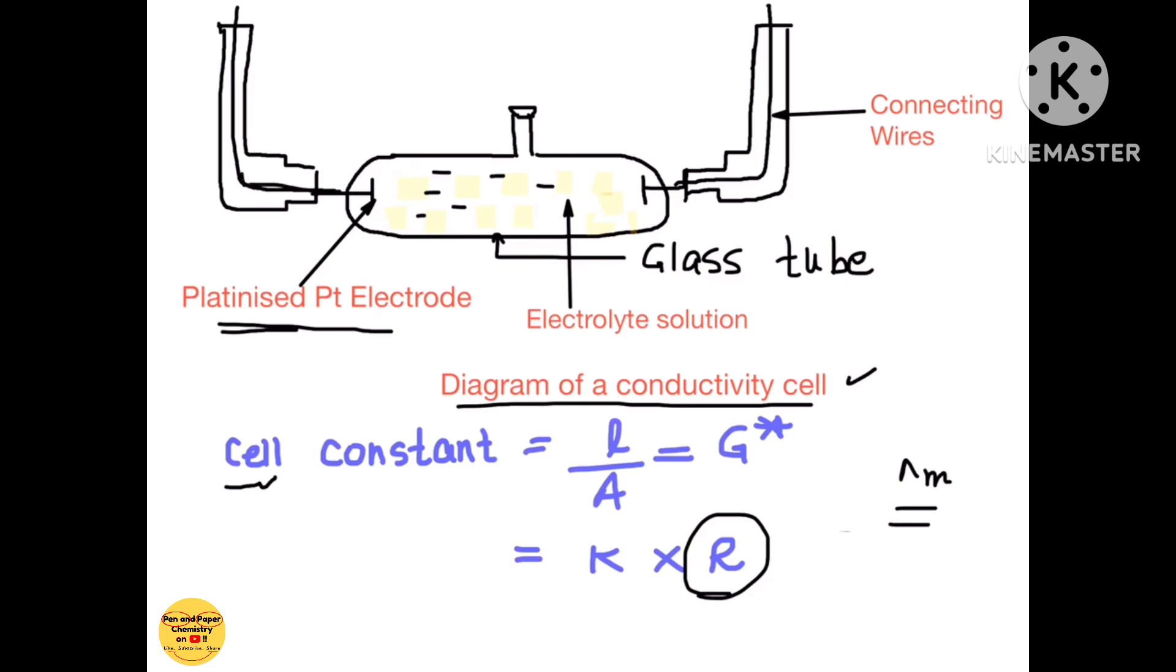These are in turn connected to platinum wires which I have labeled as connecting wires in the diagram. Why do we need these connecting wires? We will see a little later.